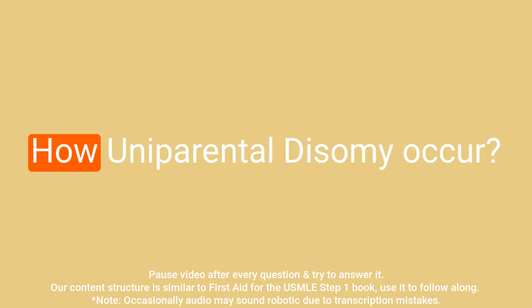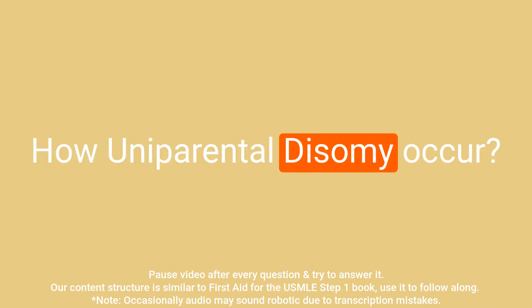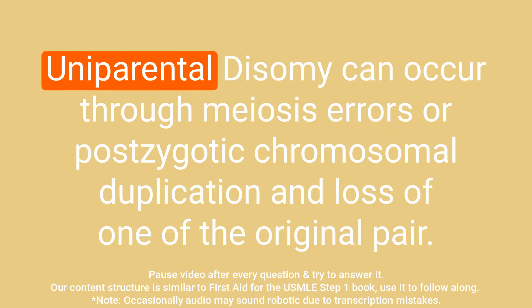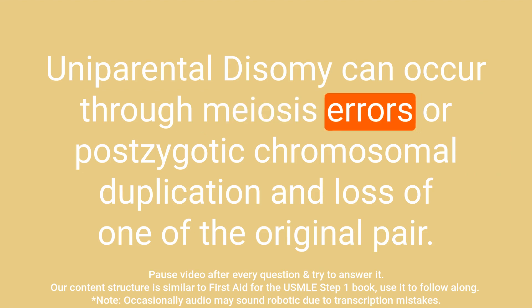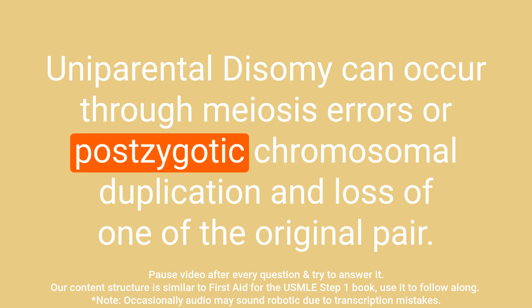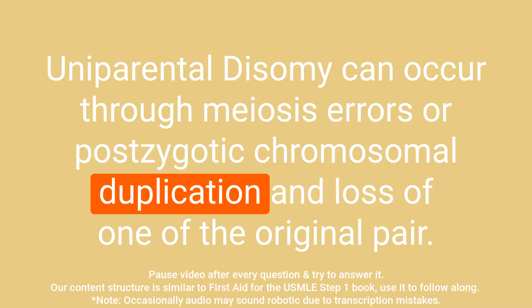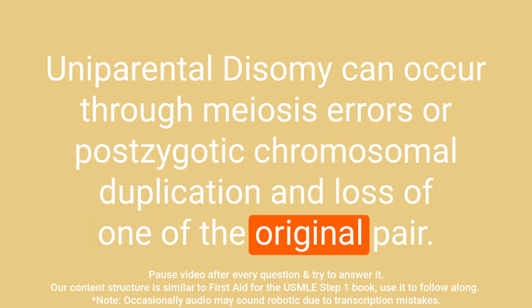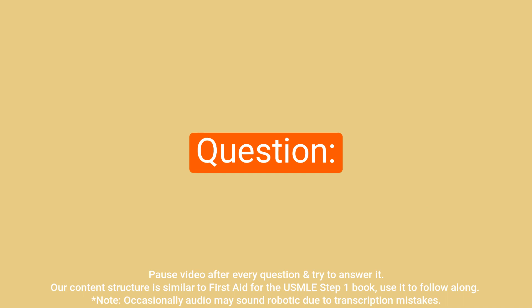Question: How does uniparental disomy occur? Answer: Uniparental disomy can occur through meiosis errors or post-zygotic chromosomal duplication and loss of one of the original pair.